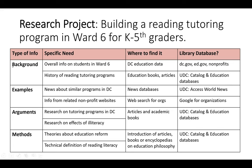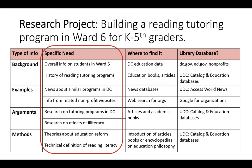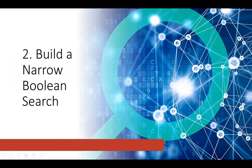This is called the BEAM method — B-E-A-M — and it is used in a lot of universities. The idea is to be as narrow as possible when you build a search, because there's too much information out there. So what I'm going to do now is show you how to search for one of these specific needs using a technique called Boolean search. You may have seen ANDs and ORs in different search systems, and I'm going to show how to build those kinds of searches.